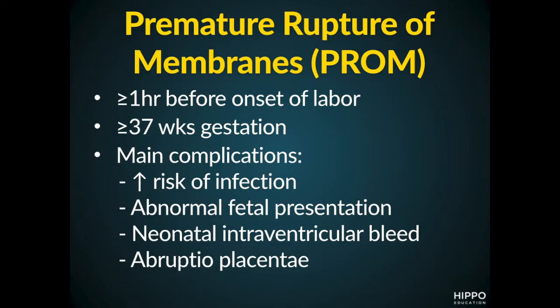With premature rupture of membranes, the main complications are an increased risk of infection that can include chorioamnionitis and neonatal sepsis. We can also have abnormal fetal presentation, an increased risk of neonatal intraventricular hemorrhage, or abruption of the placenta.